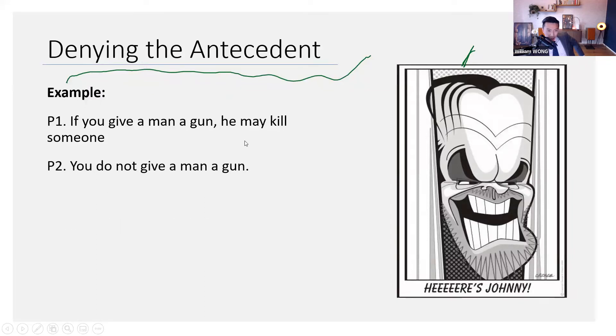Premise 2: You do not give a man a gun. So you might say not P. Therefore, he will not kill someone, not Q.